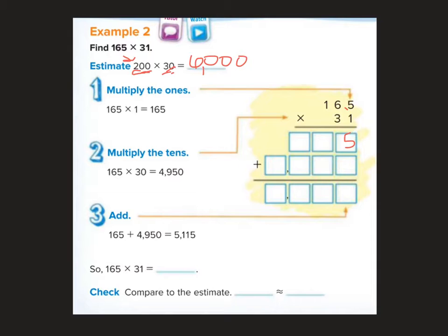So if I'm going to multiply this through, 5 times 1 is 5, 1 times 6 is 6, 1 times 1 is 1. Bring my 0 down, I'm multiplying everything by 30. 3 times 5 is 15, 3 times 6 is 18 plus 1 more is 19, 3 times 1 is 3 plus 1 more is 4.